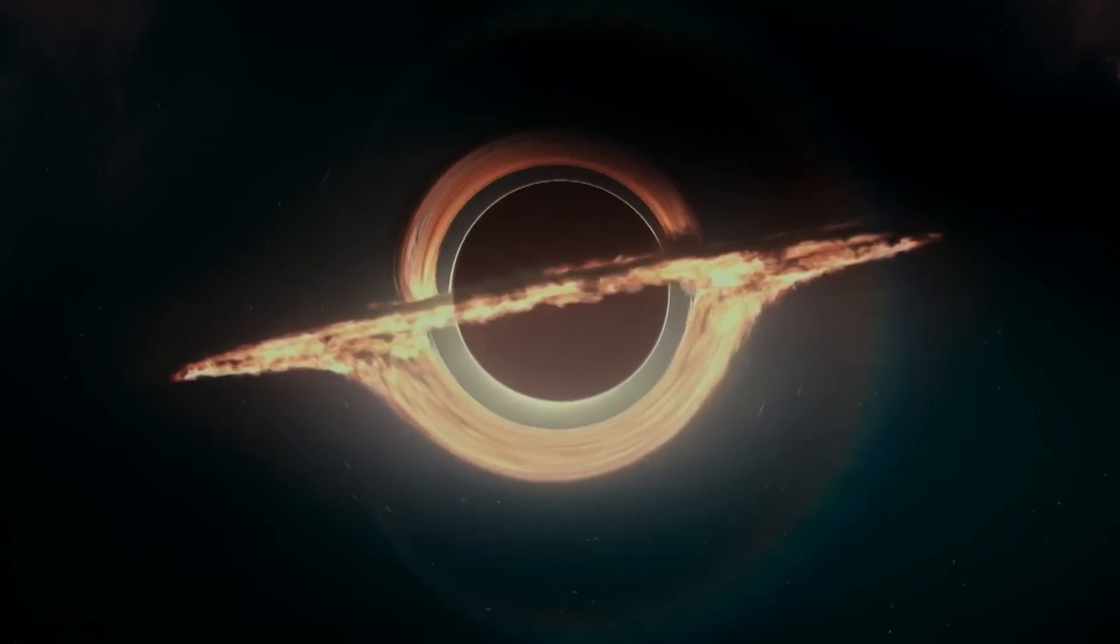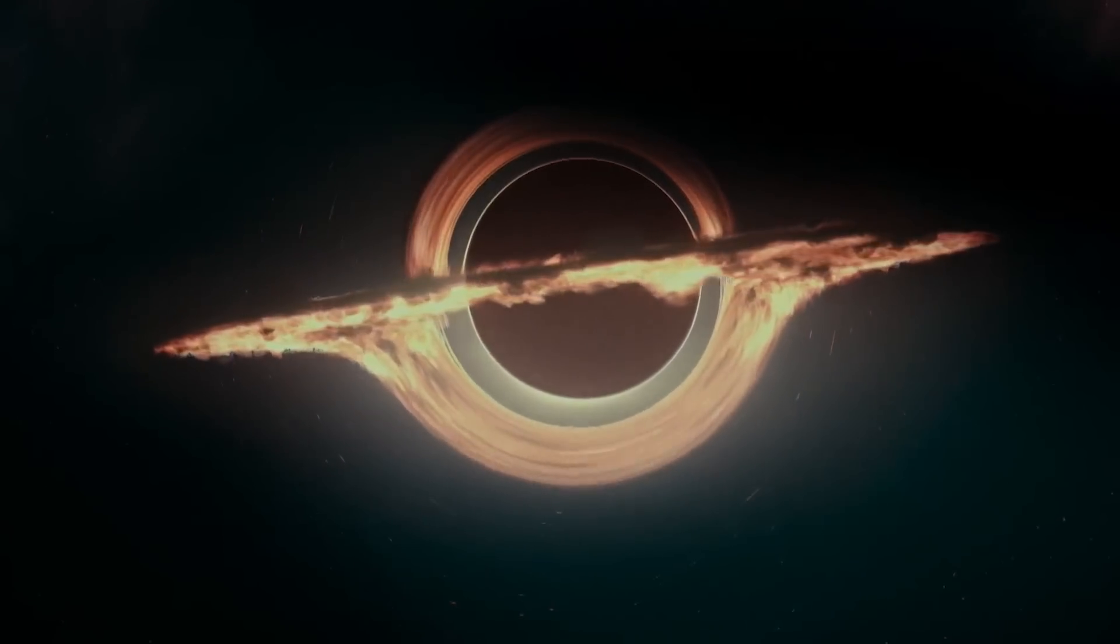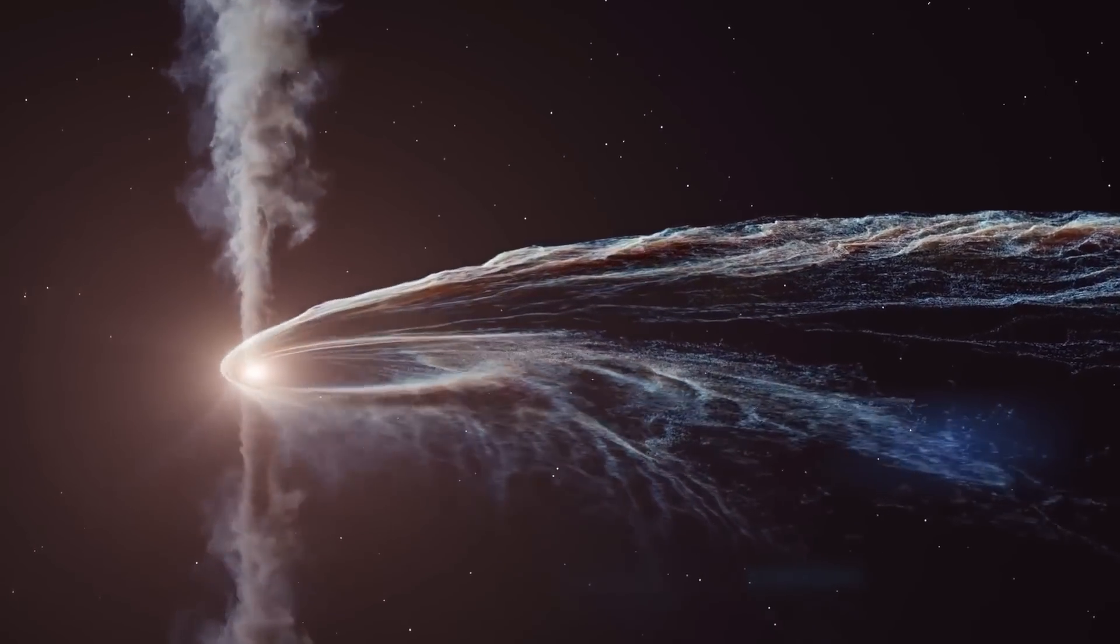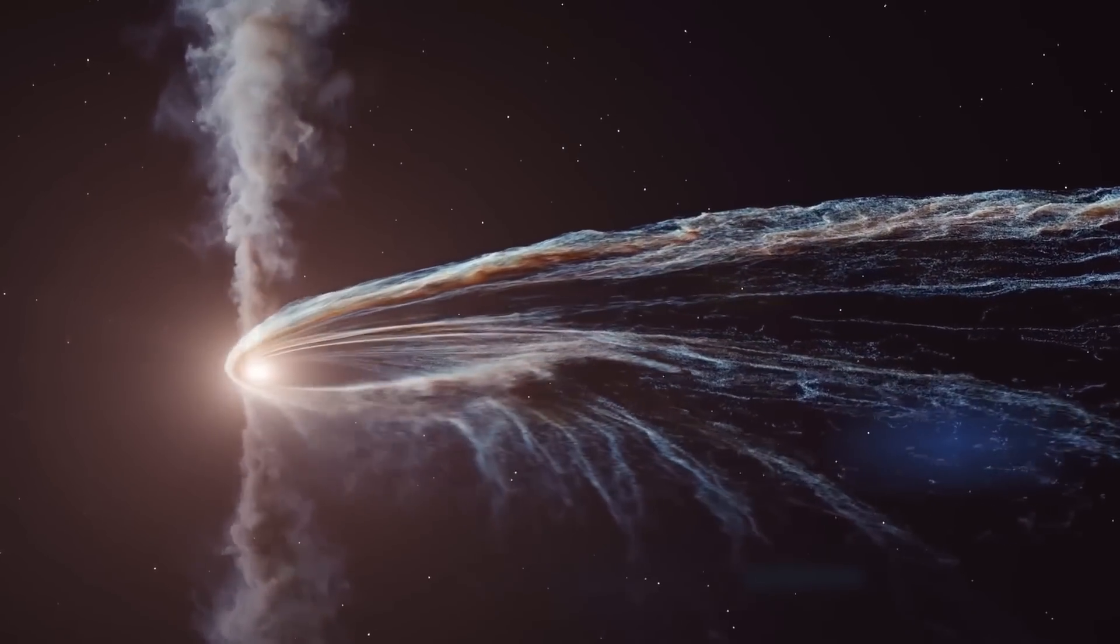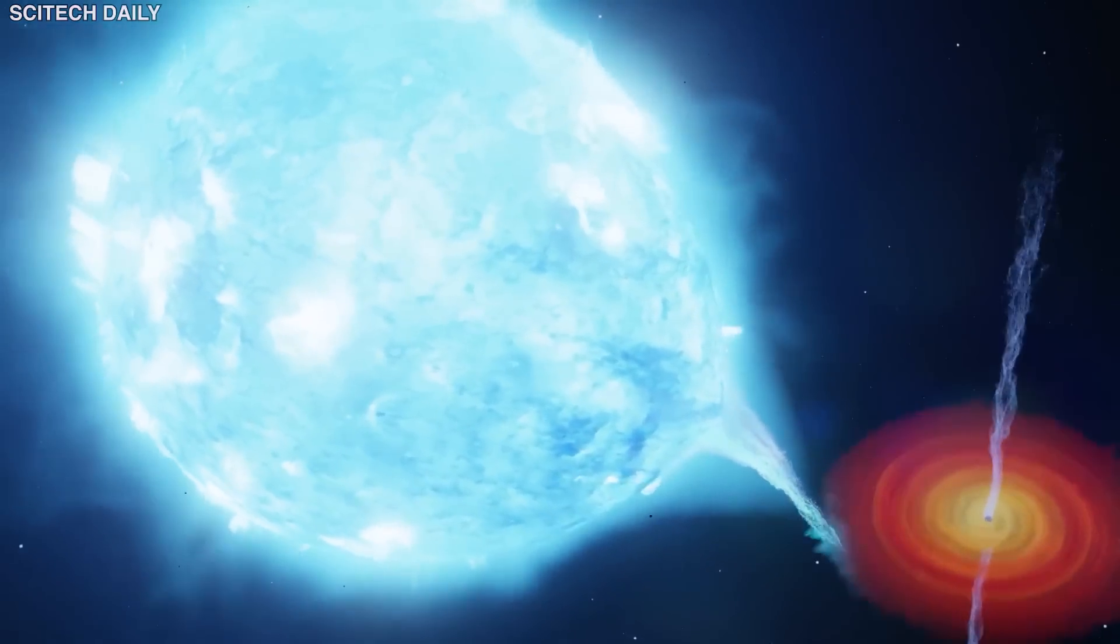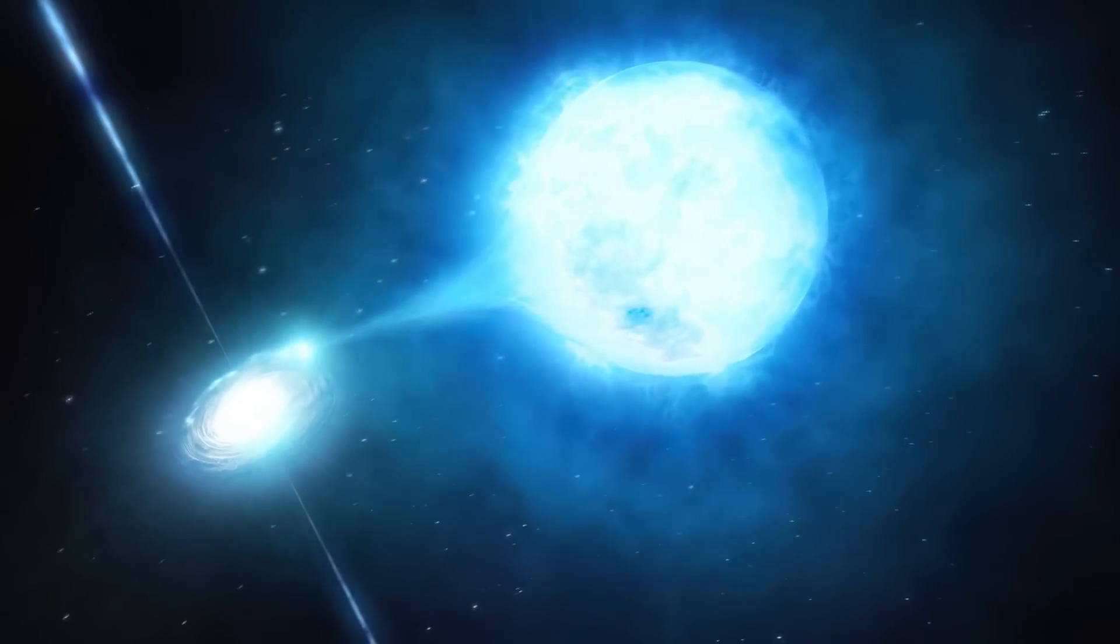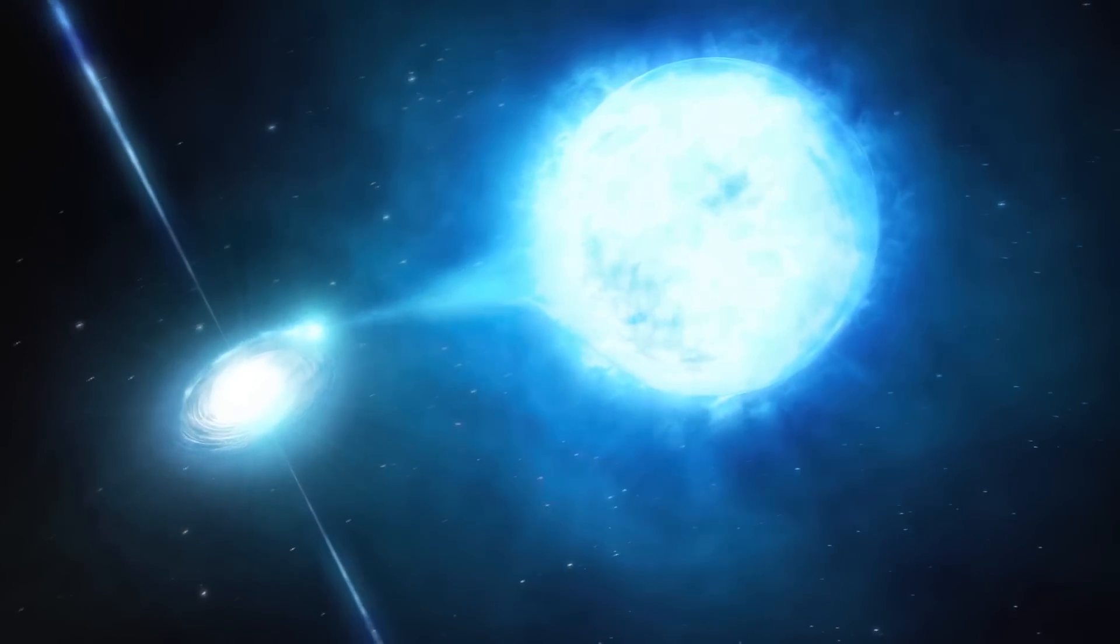A black hole cannot be seen because the strong gravity won't allow even light to escape it. However, scientists can see the effects of its strong gravity on the stars and gases around it. If a star is orbiting a certain point in space, scientists can study the star's motion to determine if it is orbiting a black hole.